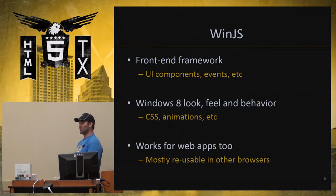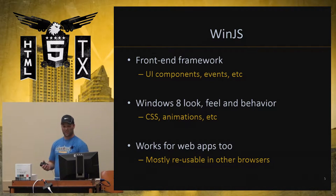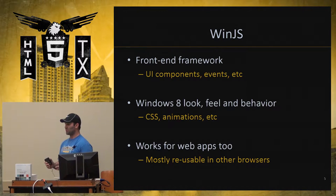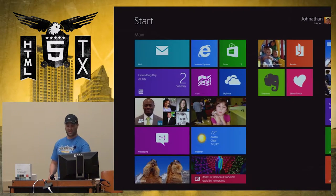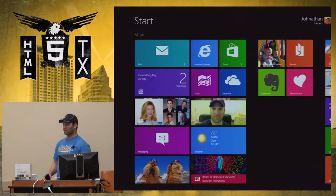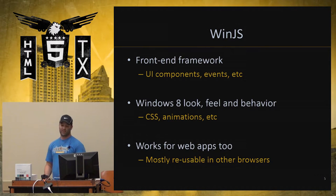There's a secondary thing provided to your app called WinJS. WinJS is like a general-purpose front-end framework that Microsoft has provided. This is not really OS-specific stuff — it's packaged components, just like any front-end framework. This one specifically will make your app look like Windows 8 — the grids, animations, and tile look and feel all come out of the box with the WinJS style.